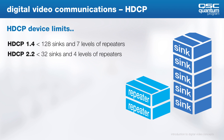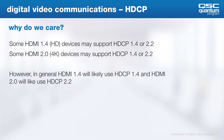In general, HDMI 1.4 is likely to be used with HDCP 1.4, and HDMI 2.0 is likely to be used with HDCP 2.2. However, some HDMI 1.4 HD devices may support HDCP 1.4 or 2.2, and some HDMI 2.0 devices may support HDCP 1.4 or 2.4.